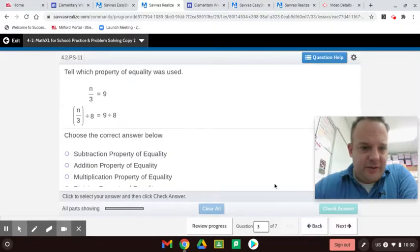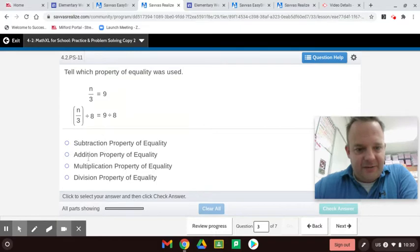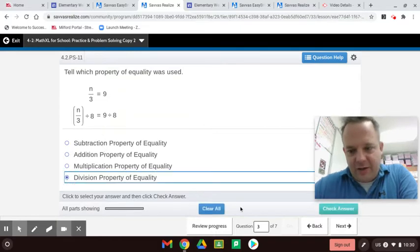Did I skip one? All right, here, n over three equals nine. If you divide by eight on one side, you have to divide by eight on the other side. What do you think this one is? That's right, the division property of equality.